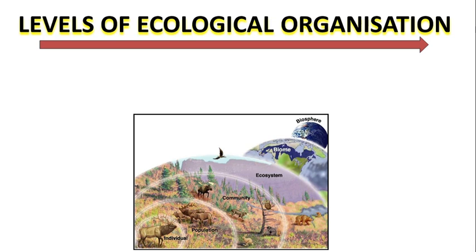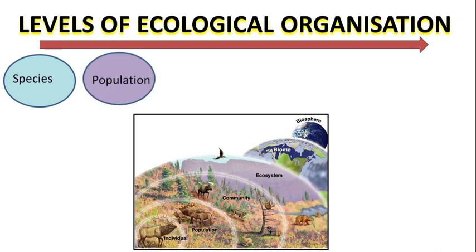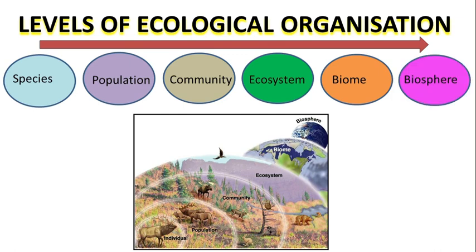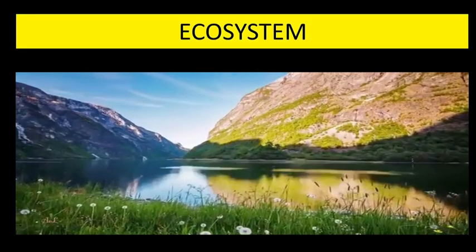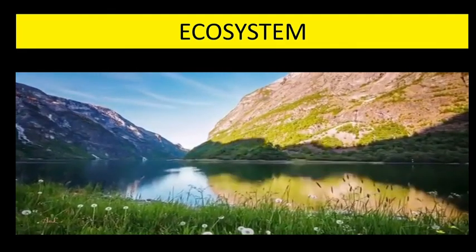In the previous video we discussed levels of ecological organization. Ecology is the study in which we analyze living organisms and their interrelationships with other organisms as well as their physical surroundings. In ecology we have mainly six levels of organization: species, population, community, ecosystem, biome, and biosphere. In this video we will be talking about ecosystem, which is the unit in which we analyze living organisms and their relationship with non-living components. Broadly, ecosystem includes living components, non-living components, and their interaction with each other.